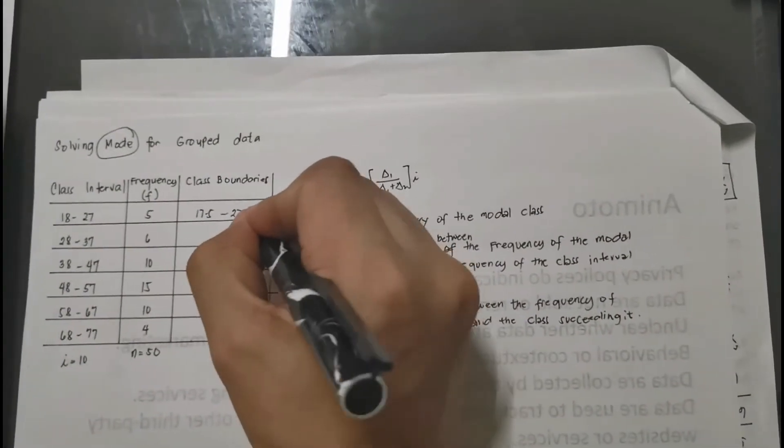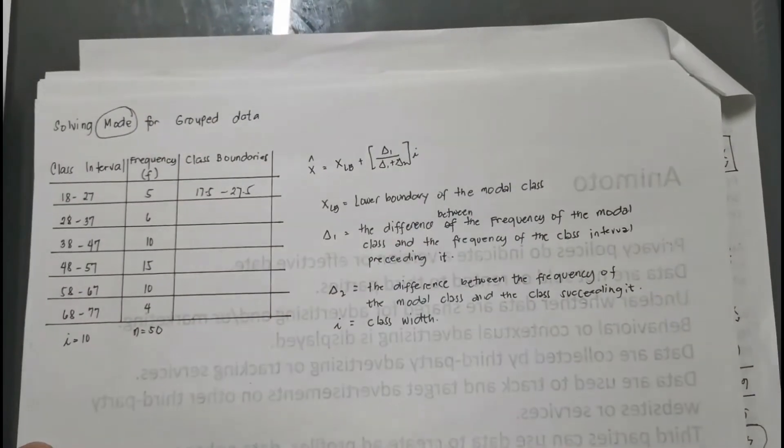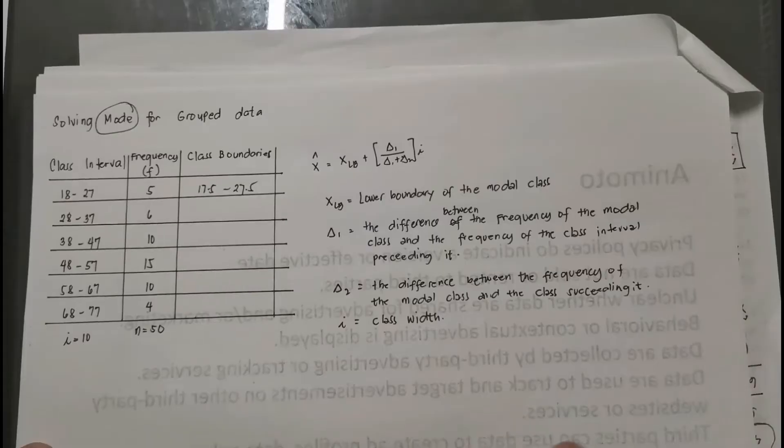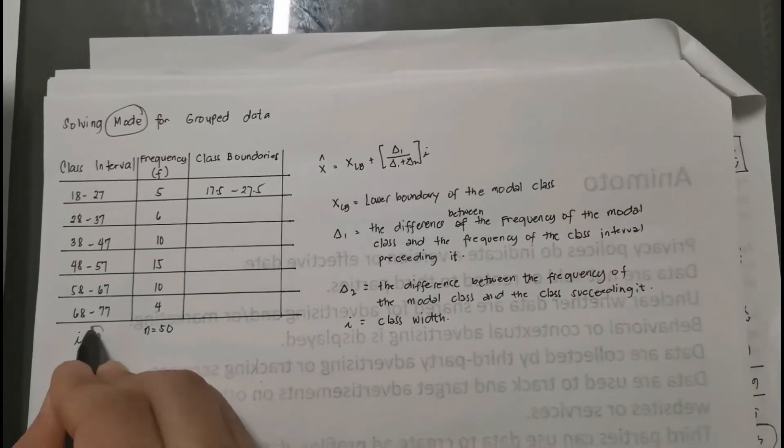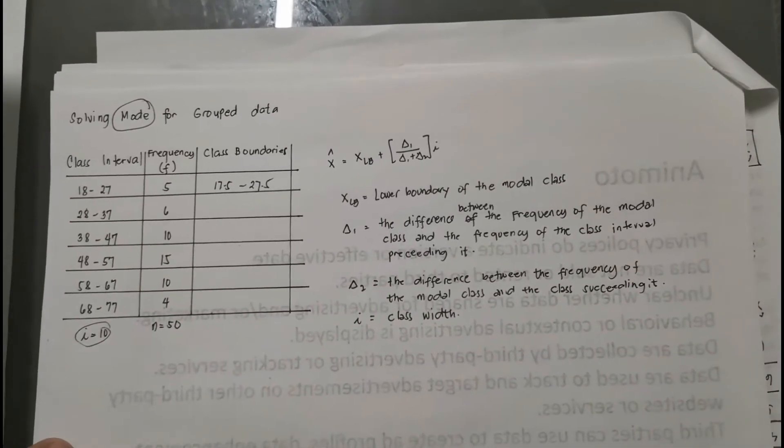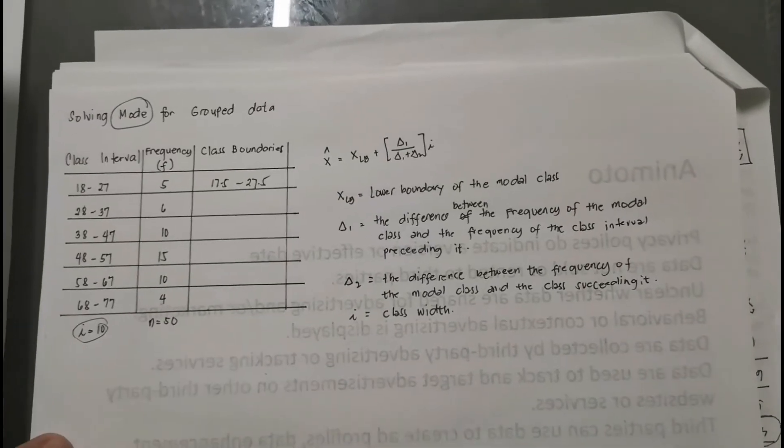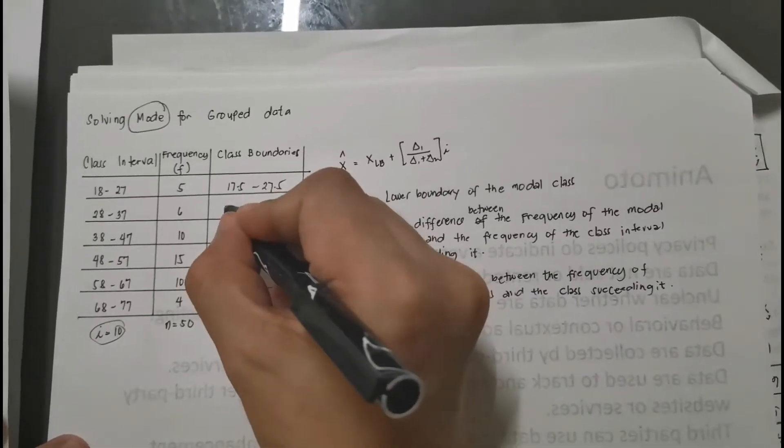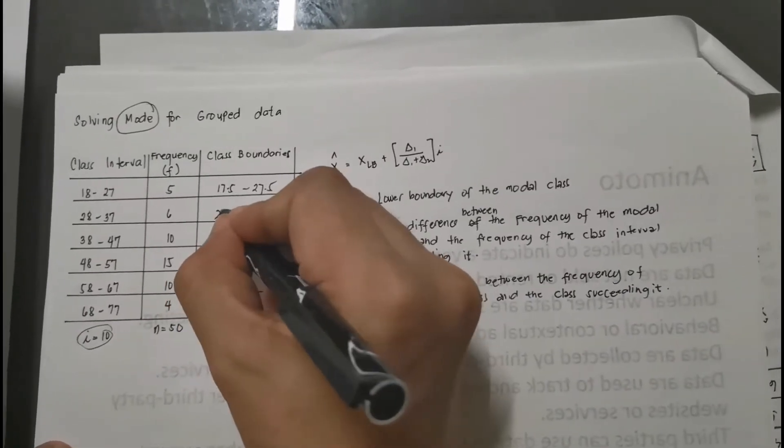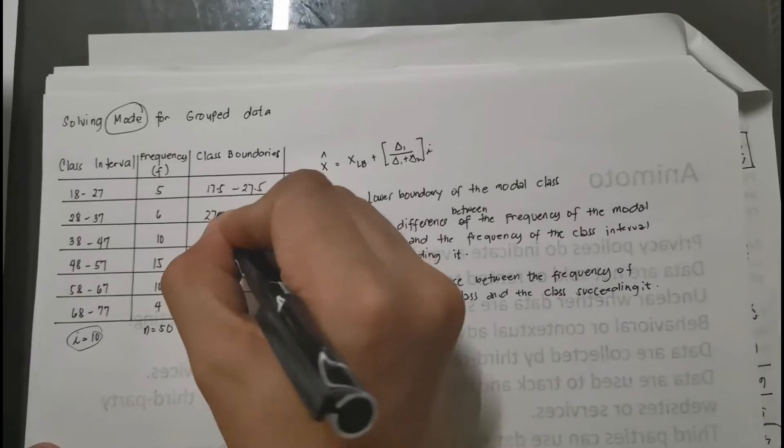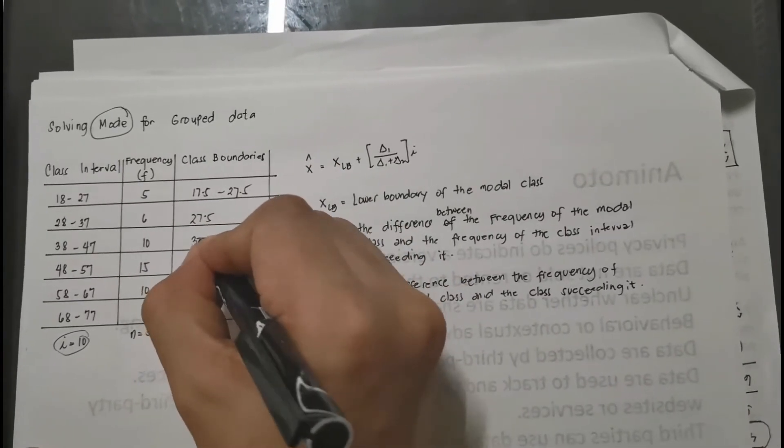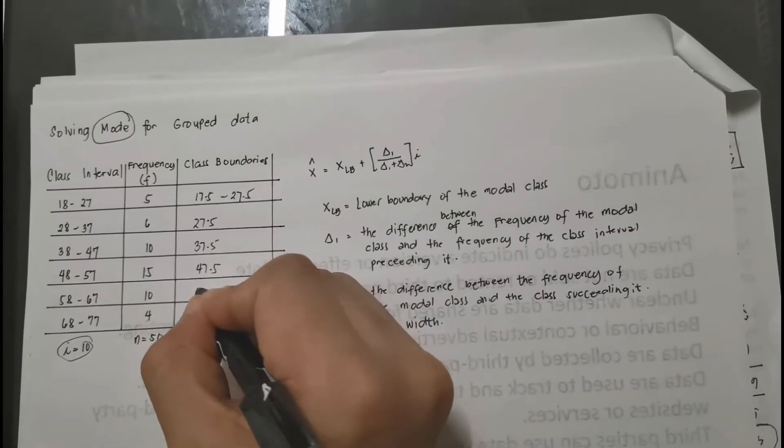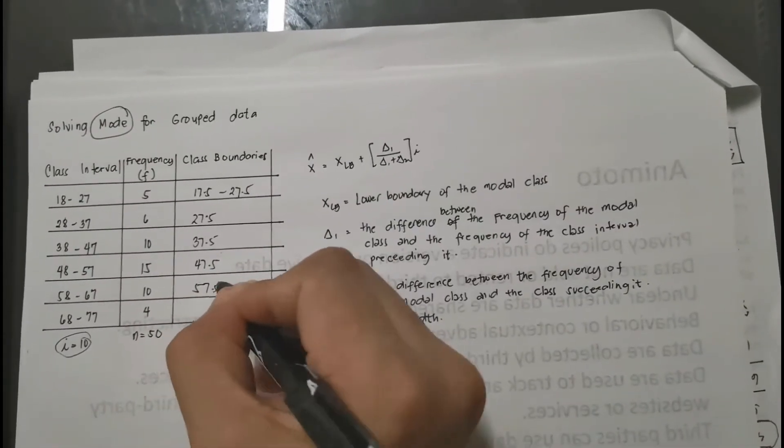And then to complete the succeeding boundaries, well I suggest to make it a lot easier, we will just add it by our class width. Yes, the class width or the width of each class interval, which is 10. So you have 17.5 plus 10, that is 27.5, then you have 37.5, 47.5, 57.5.